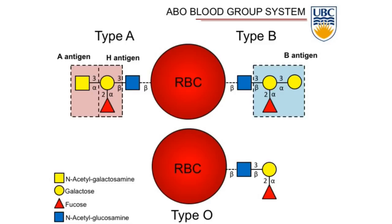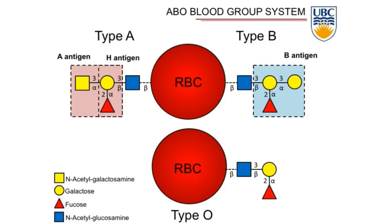What we're working on is ways in which we can selectively remove that little yellow circle from B antigen or that little yellow square from A antigen — and particularly the latter case is the one I can discuss. To do so, you've got to be able to cut that off under very mild conditions which do not disrupt the red blood cell. Realistically, I think the only way that can be done is using enzymes — Mother Nature's own catalysts — which are very good at doing things under very mild conditions. So we've been searching for enzymes to do that.